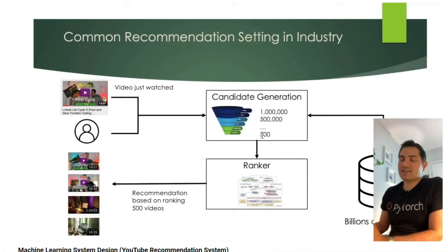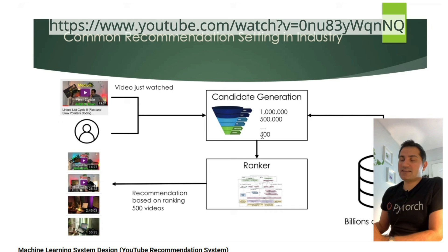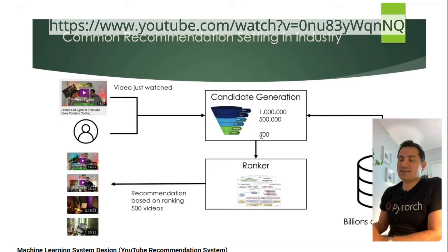The recommendation system pushes those 500 videos into a ranker. The ranker analyzes the viewer — it takes their parameters, what they've watched in the past, and tries to align those with a video. From the 500, it picks out the four or five top videos it thinks you'll really enjoy. Most thumbnails being shown look the same, and there's a reason for that — everybody's trying to perform to the algorithm's expectations, so things start looking the same after a while.